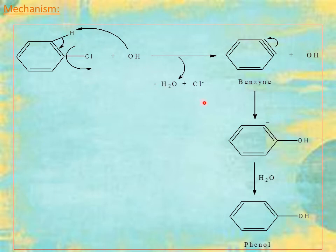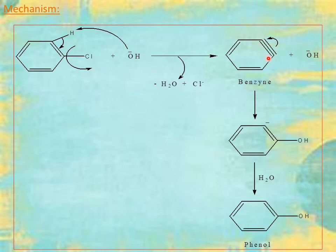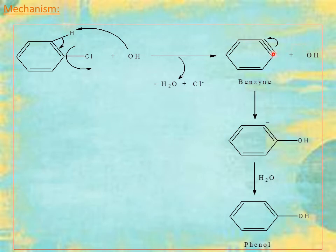The Cl is lost as Cl⁻, and H and OH are lost as water. In the next step, the benzyne ion accepts an OH⁻ ion from the base NaOH. The triple bond is unstable, so the pi bond of the triple bond shuffles toward one position, giving a negative charge at one carbon and a positive charge at the adjacent carbon. The positive charge is then attacked by OH⁻, forming an intermediate with a carbanion.